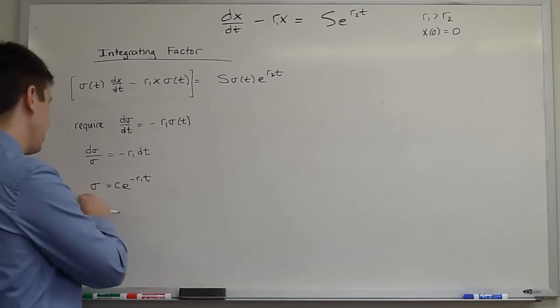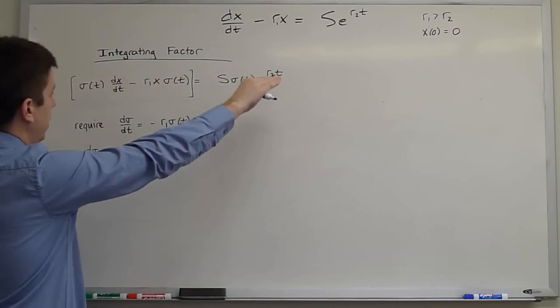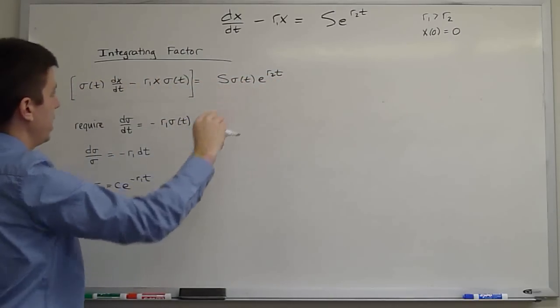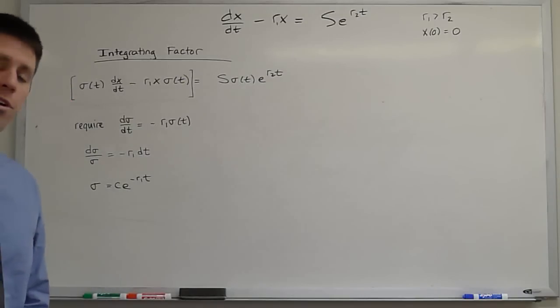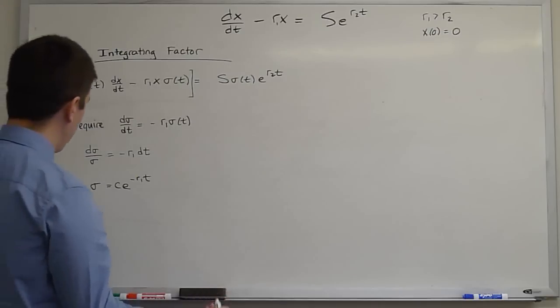We saw in class that the integration constant doesn't matter. If I multiply the whole equation by the same thing and it has an arbitrary constant in it, that arbitrary constant will just come out. So for convenience, we may as well set c equal to 1.